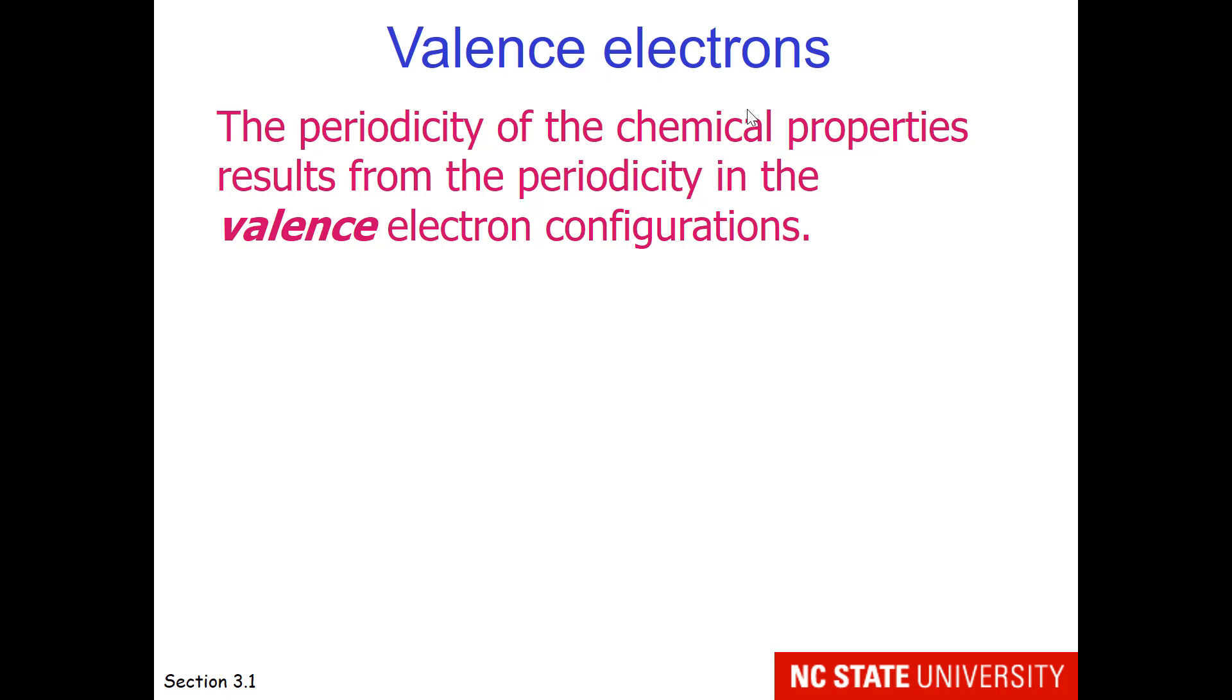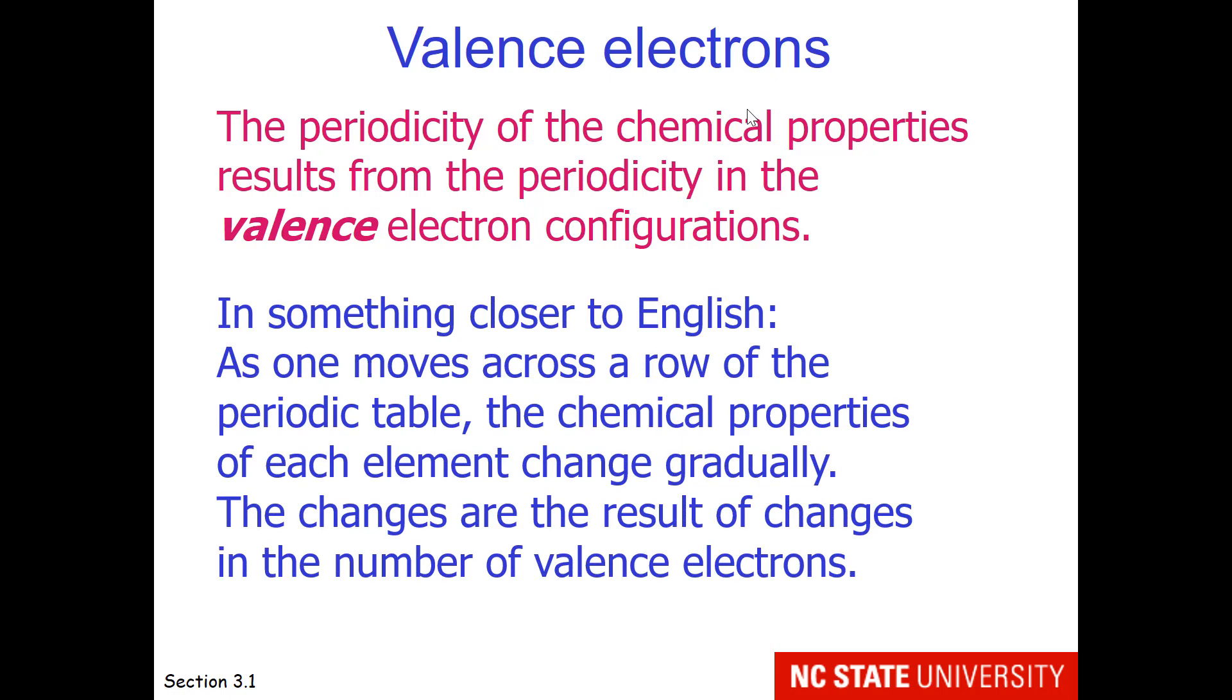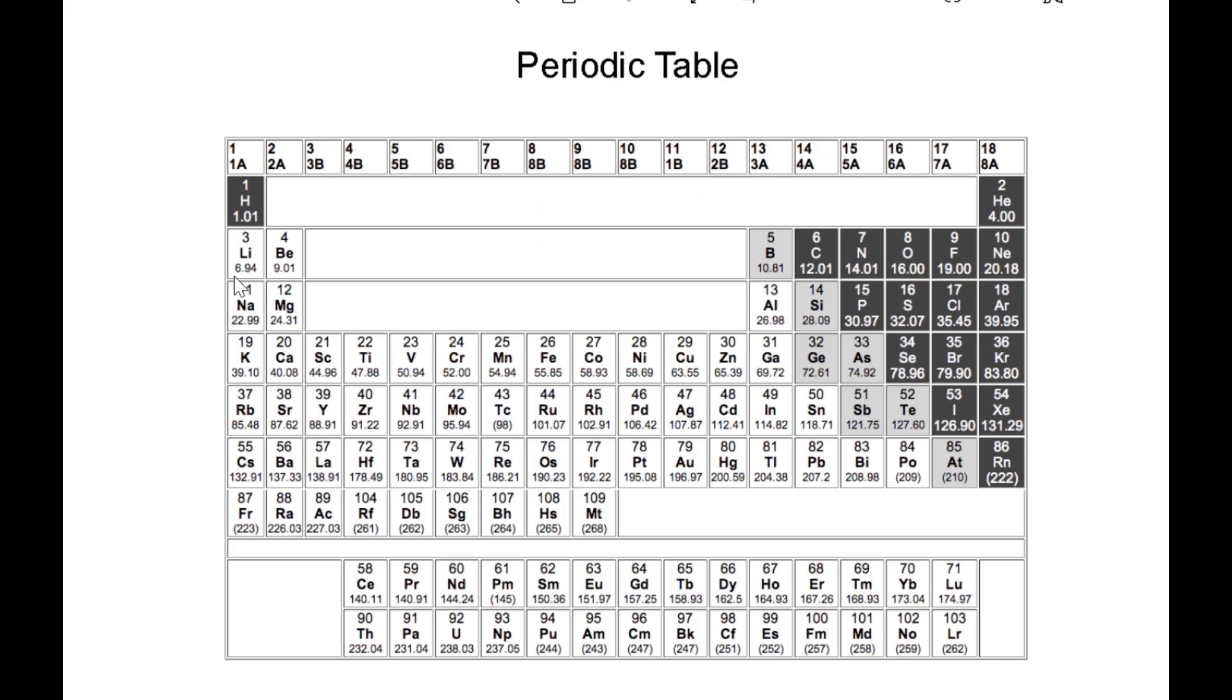Valence electrons are important because they affect the behavior of different groups of elements. Your book has a statement, the periodicity of the chemical properties results from the periodicity in the valence electron configurations. Well, here's English. As one moves across a row of the periodic table, the chemical properties of each element change gradually, and these changes are the result of changes in the number of valence electrons. Let me give you an example starting with sodium. Sodium is in column 1. It has 1 valence electron and it typically has a plus 1 charge. Magnesium is in column 2. It has 2 valence electrons and it typically has a plus 2 charge. Aluminium is in column 3. It has 3 valence electrons and it has a plus 3 charge. So that's an example of slowly changing properties as one goes across the period in a periodic table.